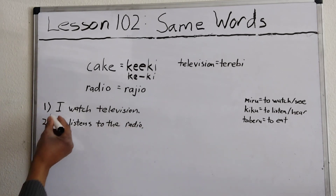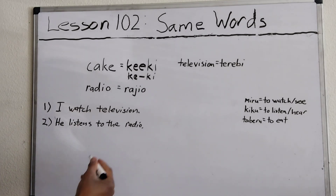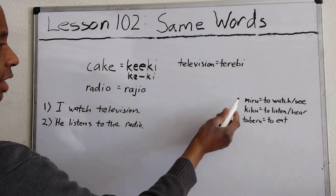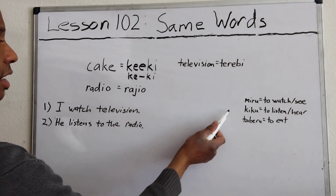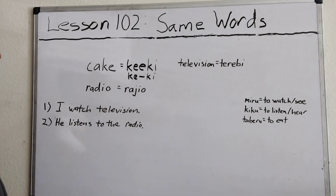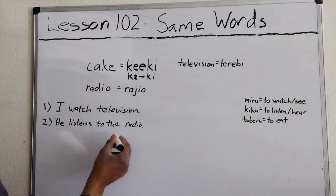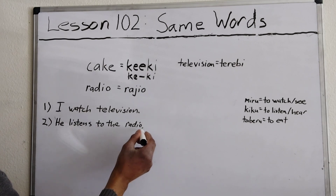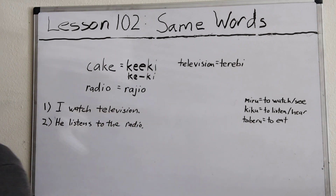Let's go over some samples. 'I watch television and he listens to the radio.' The word 'miru' means to watch or see, and 'kiku' means to listen or hear. Remember, we use 'rajio' as a direct object — we don't say 'to the radio,' we just do 'the radio.' It's the direct object.